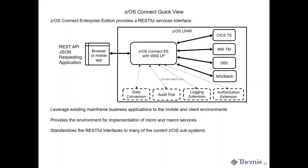Messages in IMS would be the IOPCB. CICS would be channels or containers or COMMAREA. DB2 would be the parameters for a stored procedure. MQ would be a message in a queue. And of course batch could be simple parms or working with MQs. So it hides all the uniqueness of RESTful interfaces across these subsystems and makes it one standardized way, doing all the parsing — so the applications themselves don't have to handle it; it's all done for them by ZOS Connect.